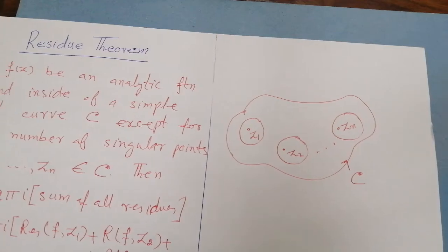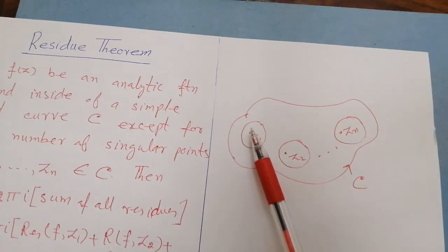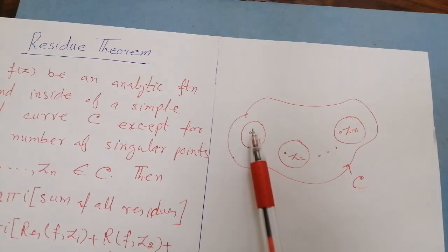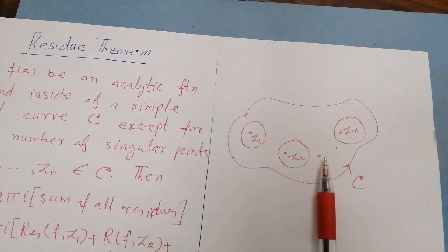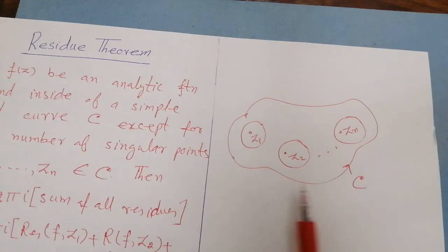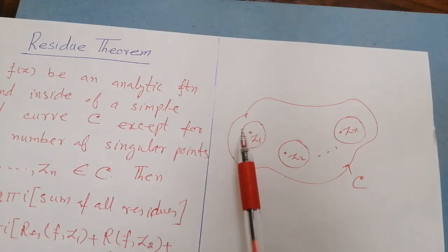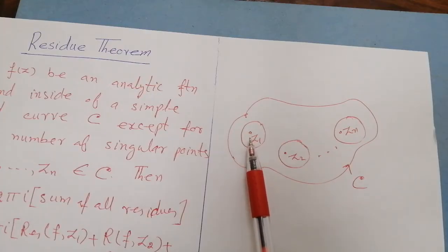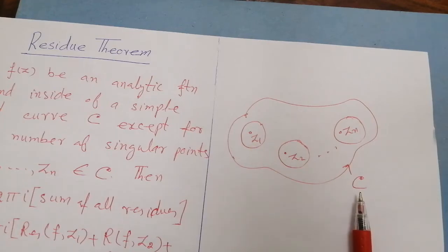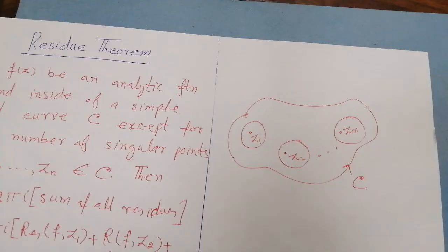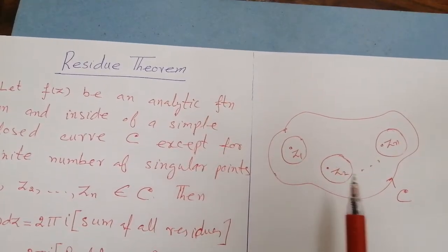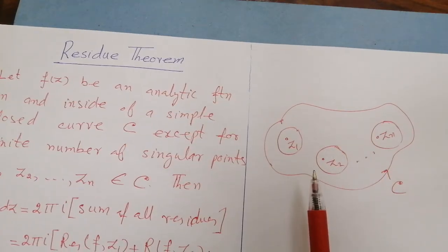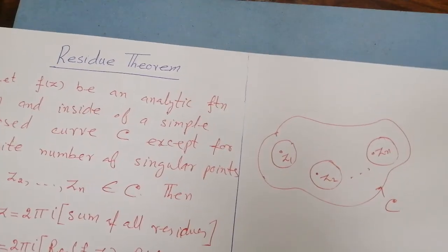In previous lectures we studied that if a function is analytic throughout a closed curve — that is, if there is no singular point inside or on the boundary — then we use the Cauchy Integral Theorem, and according to that theorem the integration vanishes, equal to zero. On the other hand, the Cauchy Integral Formula handles the case where there is a singular point inside the curve c. Now the Cauchy Integral Formula and the Cauchy Residue Theorem behave alike; both can find integrals of this type. However, the residue theorem is simpler than the Cauchy Integral Formula.